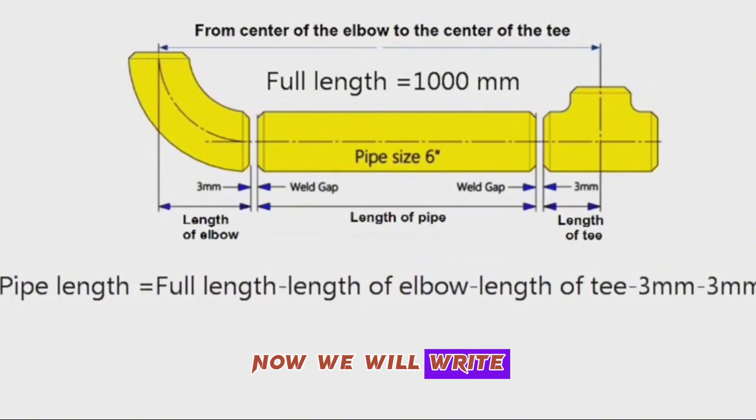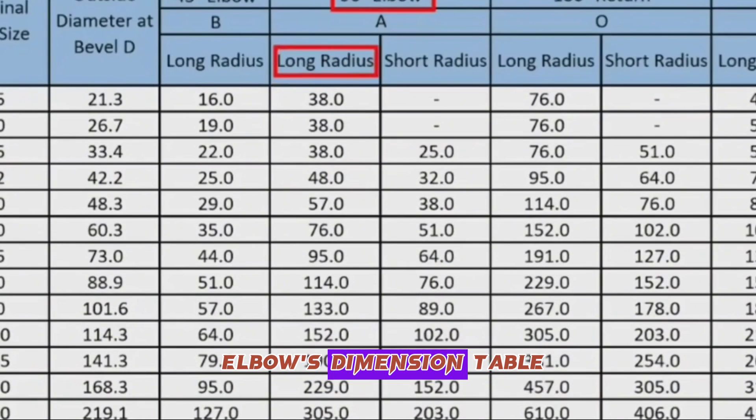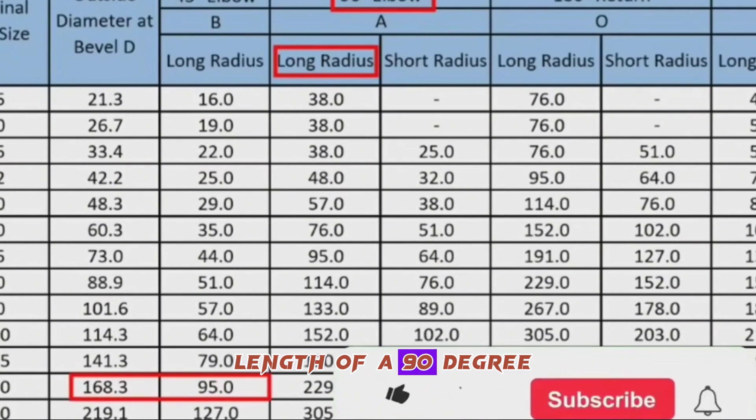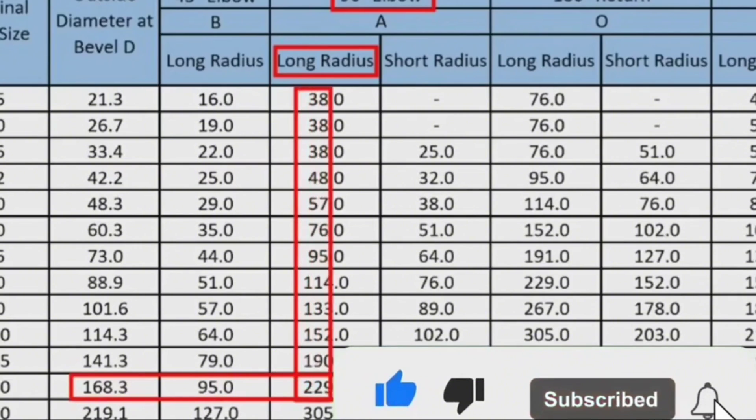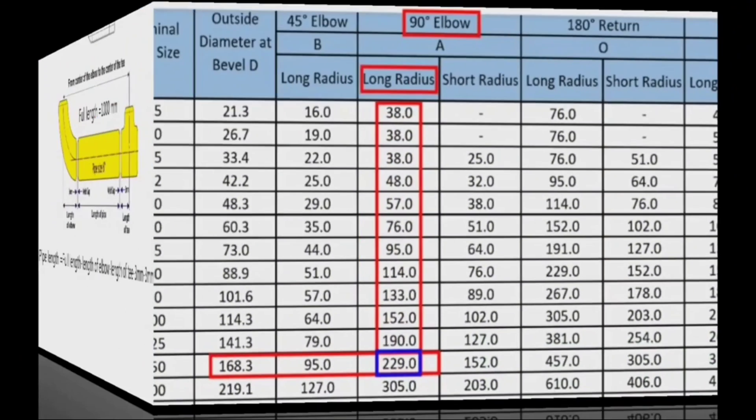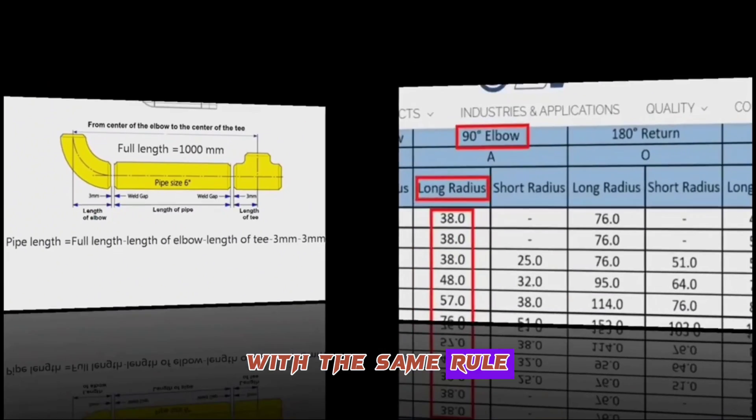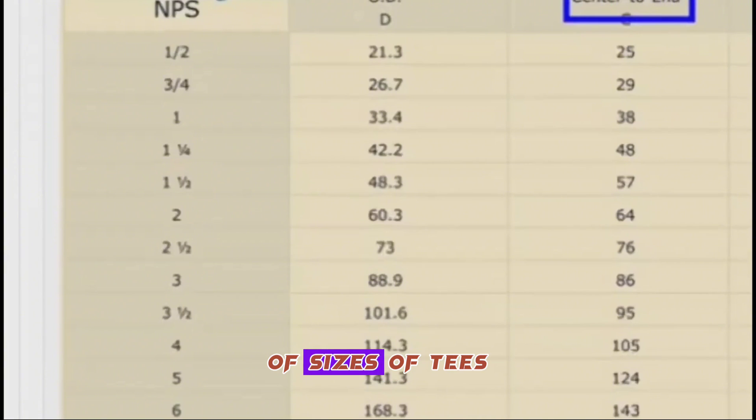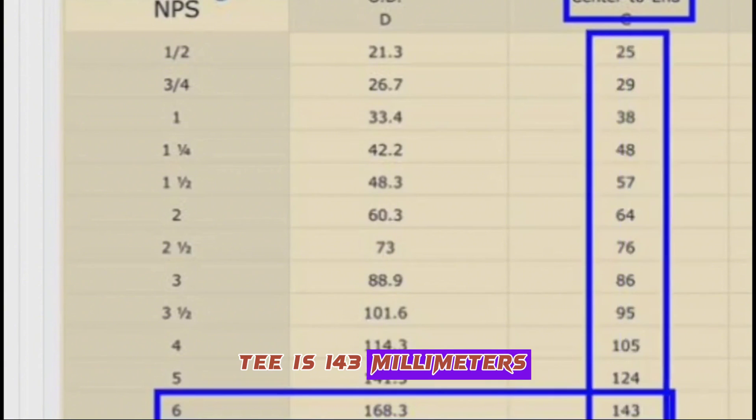Now we will write and calculate the dimensions of the pipe fittings in this pipeline from their standard tables. First, looking at the elbow's dimension table, we find that the length of a 90-degree 6-inch elbow is 229 millimeters. With the same rule, we look at the standard table of sizes of T's and learn that the center to end of a 6-inch T is 143 millimeters.